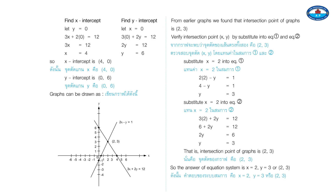Finding intercepts for another equation: let y equals 0 — 3x equals 12, x equals 4, x-intercept is (4, 0); let x equals 0 — 2y equals 12, y equals 6, y-intercept is (0, 6). From both graphs, the intersection point is (2, 3). Verifying: substitute x equals 2 — y equals 3 in both equations. So the solution of the equation system is x equals 2, y equals 3, or (2, 3).